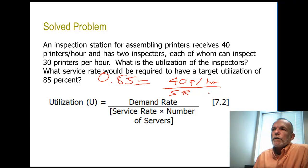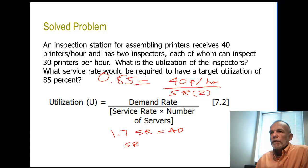Okay, so if we cross multiply here, we'll get 1.7 SR equals 40. Or SR equals about 23.5, and the units of measurement would be the same as we see in the demand rate, which would be printers per hour. Okay, let's go to the next problem.